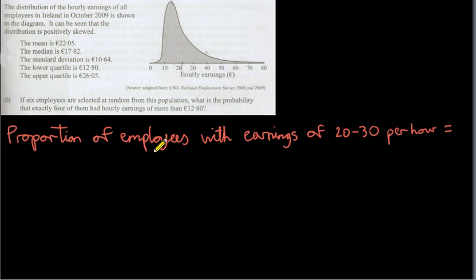Suppose we want the proportion of employees with earnings of 20 to 30 euros per hour. Proportion just means fraction. What we would do is go to our probability distribution and go to x equals 20 and x equals 30 and get the area under the curve between x equals 20 and x equals 30. So we just go up vertically from x equals 20 and vertically from x equals 30 and get this area here.